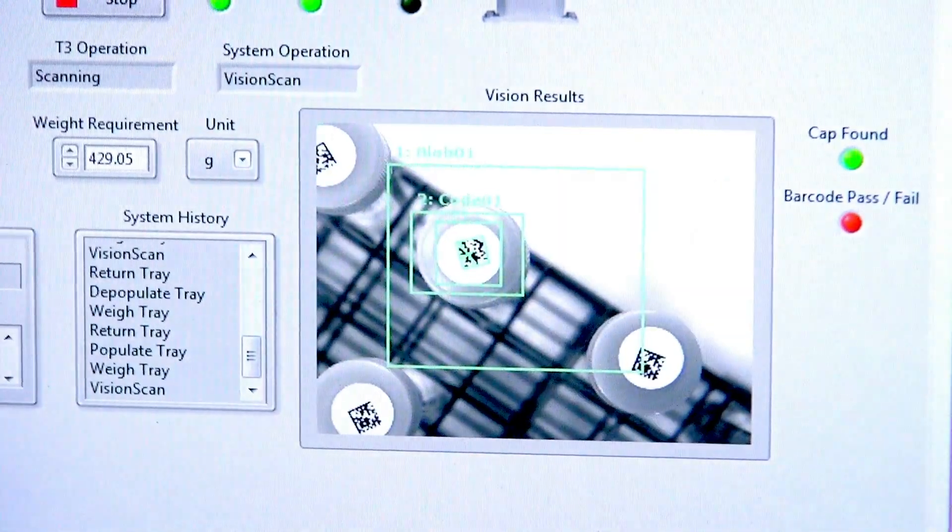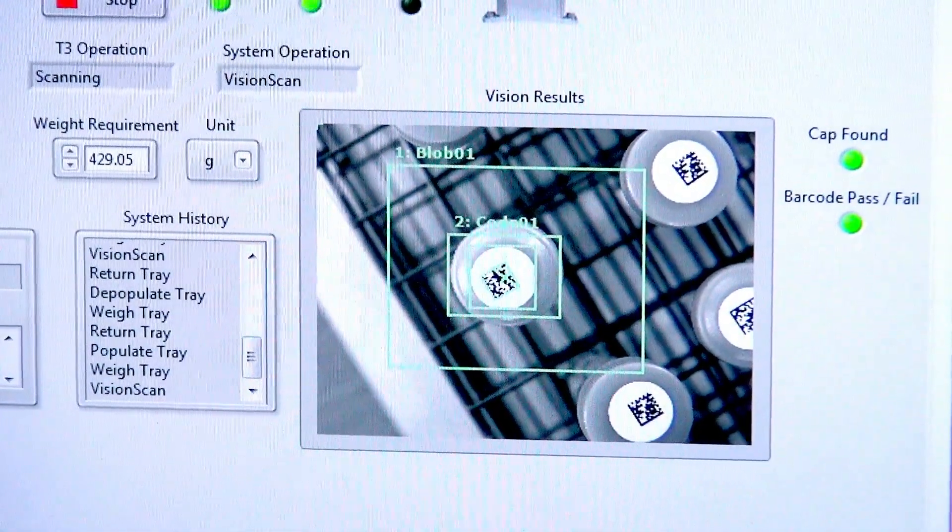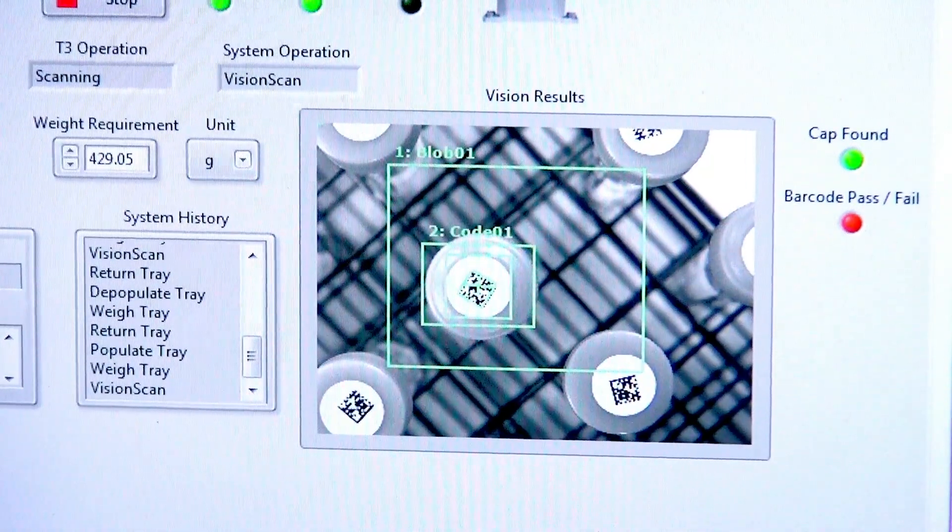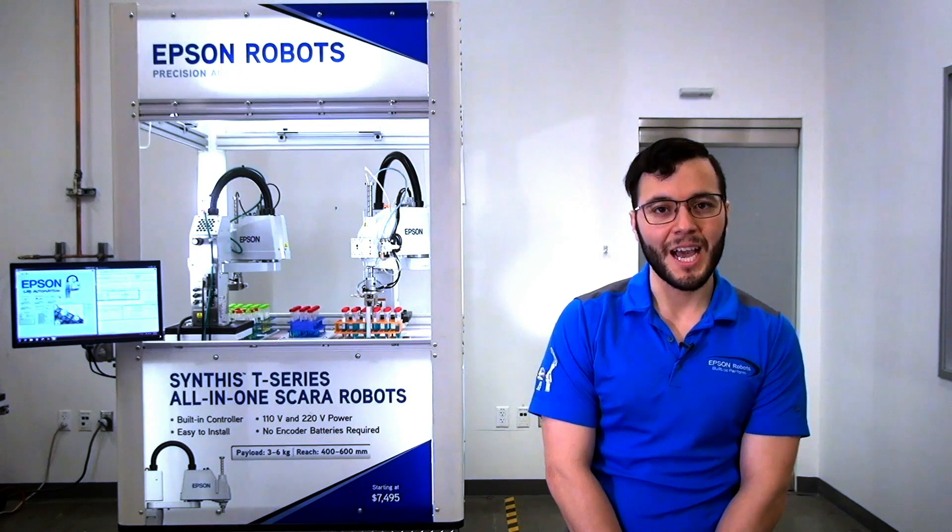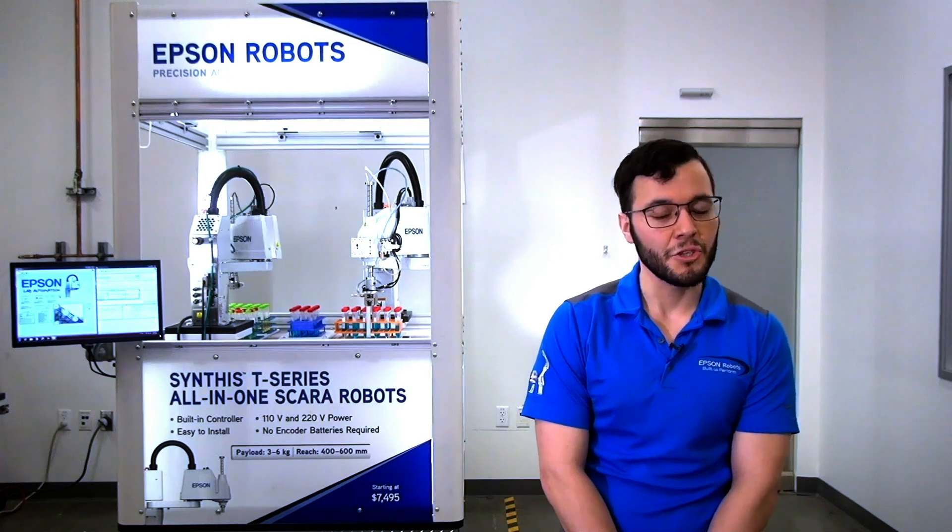The vision system is inspecting test tube caps, reading data matrix codes on the caps, and determining which tubes are good to pick. Once it finds tubes that are good to pick, it uses vision guidance to tell the robot where to go to pick the test tubes without having the gripper collide onto the head of the tubes.